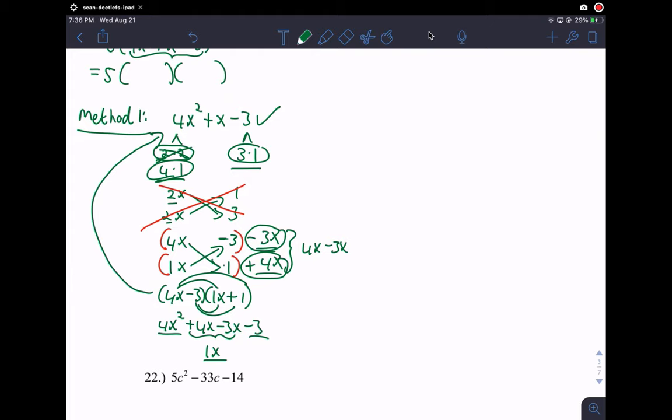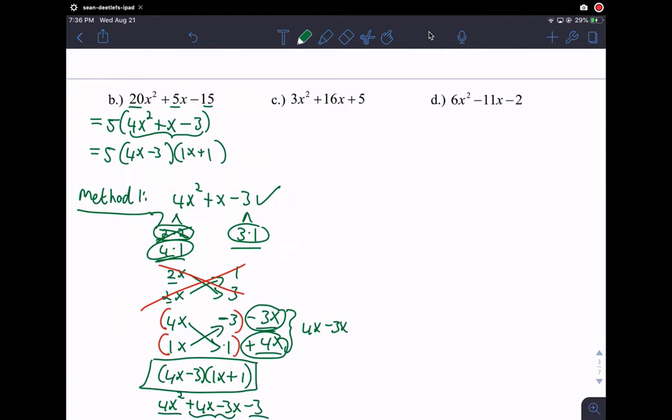And so if you foil this, you get 4x squared plus 4x minus 3x minus 3. And this term here turns into 1x. So 4x squared plus 1x minus 3. That's what I set out to factor. So the answer for all of this, after all of that work, the answer here turns out to be this. This is the answer. This is the factored form. So then I just write that here, 4x minus 3 and 1x plus 1. Please don't forget to leave this common factor in front of the answer. So the final answer for this question would be that. Don't throw away the common factor. It's a very common mistake students make.